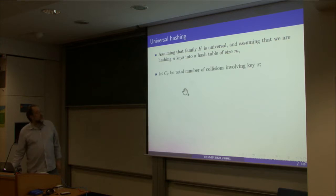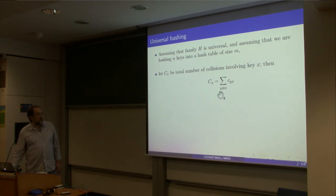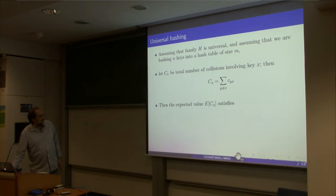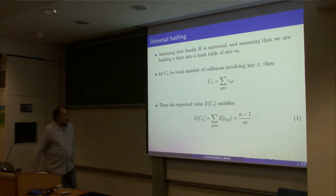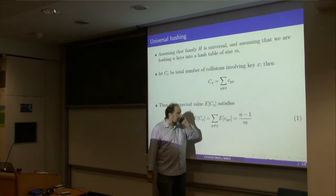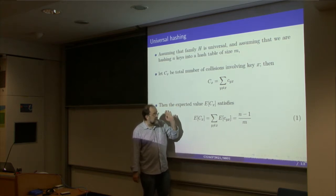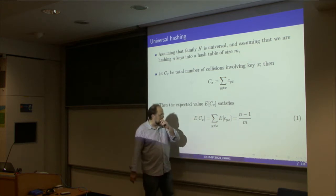Now we want to estimate the total number of collisions with x. Let C(x) denote the total number of collisions involving key x. C(x) is simply the sum of all these random variables over all y not equal to x. By additivity of expectation, the expected value of C(x) is the sum of the expected values of these indicator variables. They all have the same expectation 1/m, and we have n minus 1 of them, so the expected number of collisions is (n-1)/m.